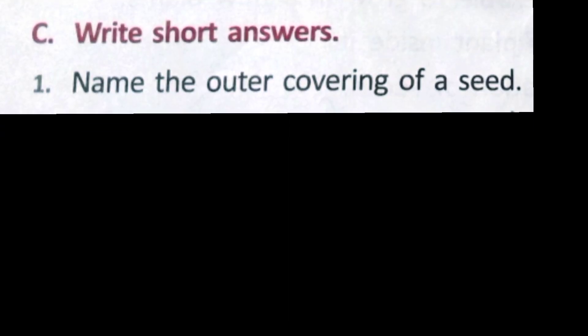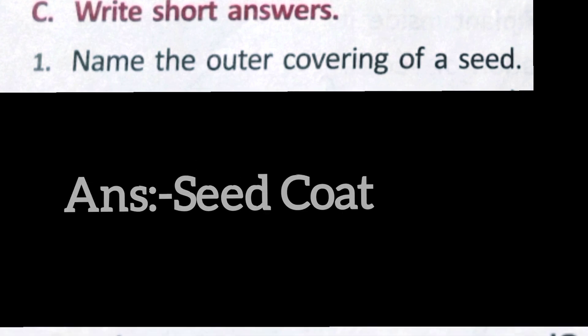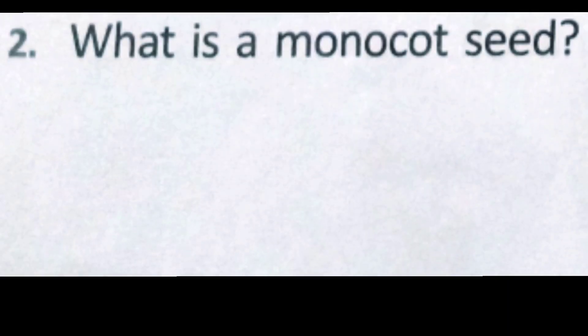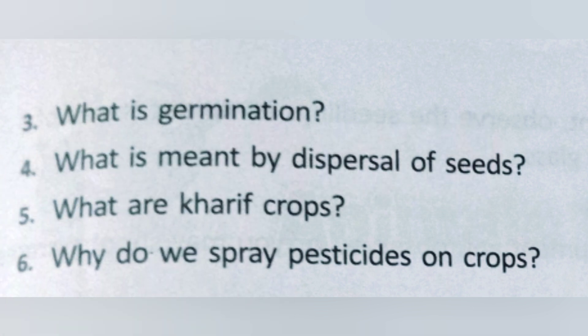C part is write short answers. First question: name the outer covering of a seed — it is called seed coat. Second question: what is a monocot seed? A seed having one seed leaf is called a monocot seed.